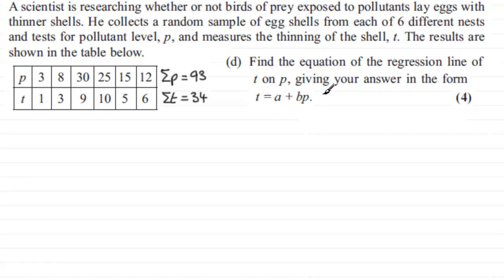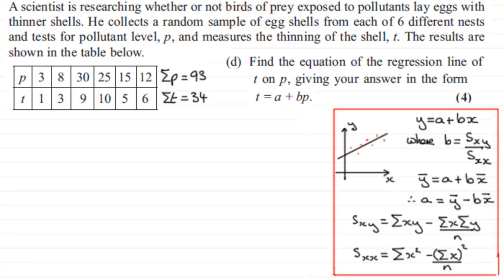OK, well, let's see now how you got on. To do something like this, a bit of background information that you should be familiar with, that is that if you are plotting a graph of y on x, a scatter diagram, and you're trying to find the line of regression, the equation of it, it's given in the form y equals a plus bx, where b is equal to sxy over sxx.